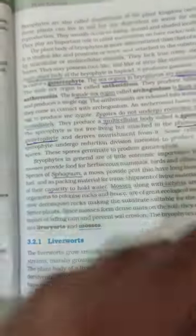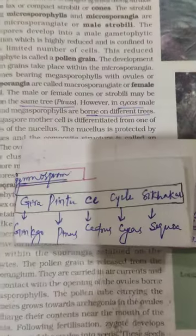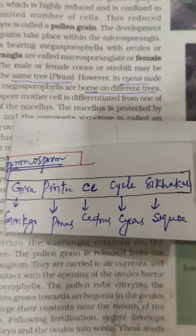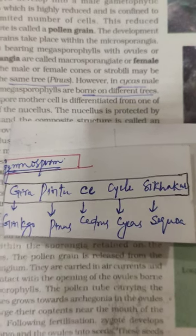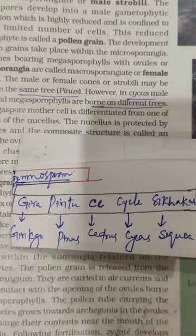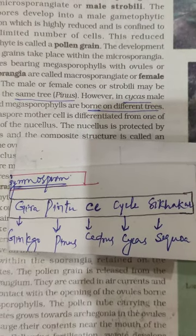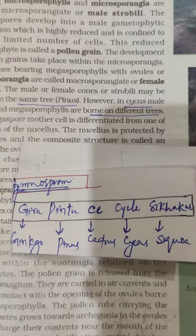Next are the examples of gymnosperm. The examples of gymnosperm can be remembered by the trick 'Gira Pintu Se Cycle Sikhakar': Gira relates to Ginkgo, Pintu to Pinus, Se to Cedrus, and Sikhakar to Cycas.